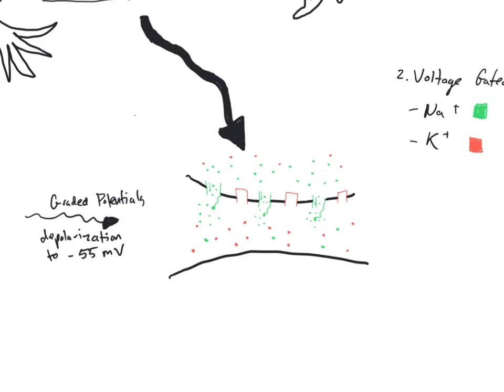As sodium moves into the axon, it increases the charge within the cell quite quickly, all the way up to plus 30 millivolts, which is the top of our peak. At plus 30 millivolts, two things occur: the inactivation gate in those sodium channels will close, blocking more sodium from entering the cell. The second thing is that those potassium channels will now open, permitting potassium to leave the cell, making the internal environment more negative, approaching minus 70 and ultimately minus 90 millivolts.